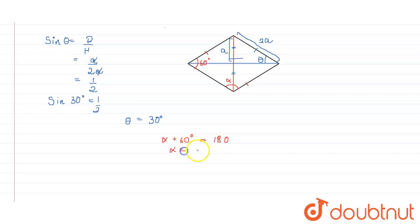So alpha would equal 120 degrees. The angles of the rhombus are 60 degrees and 120 degrees. Since this is 60 degrees, this will also be 60 degrees. This is 120 degrees, so this will also be 120 degrees. These are the angles of the rhombus.